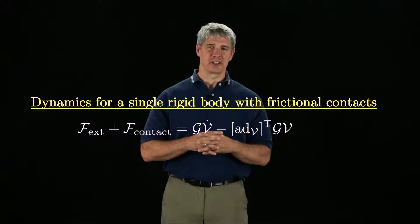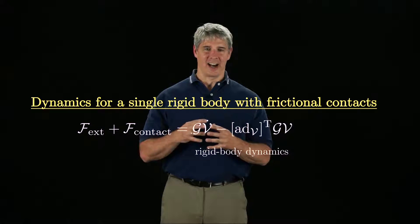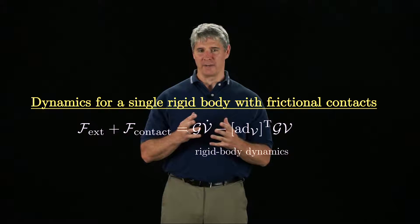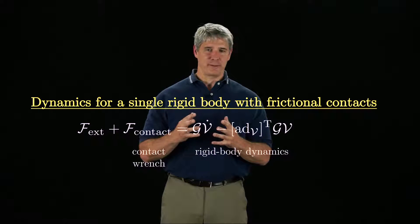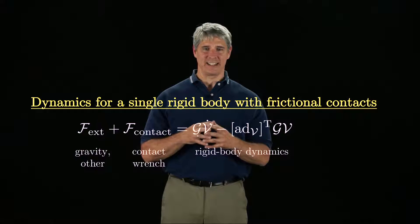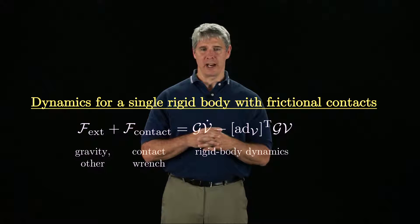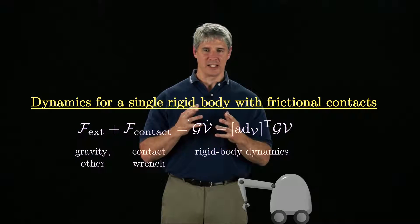This is the equation of motion for a single rigid body subject to frictional contacts. The right-hand side is the rigid body dynamics we derived in Chapter 8. F-contact is the total wrench from all the contacts, and F-ext is the wrench due to gravity or other forces. The procedure to analyze a rigid body mechanics problem with friction is as follows.